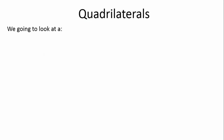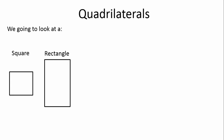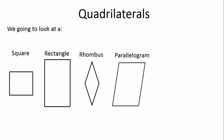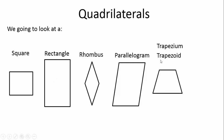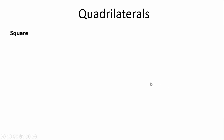We're going to look at a square, a rectangle, a rhombus, a parallelogram, a trapezoid or trapezium depending on what you prefer to say or which country you're in — you'll see the difference between those two. And a kite. We're going to learn how to correctly label each of these shapes.